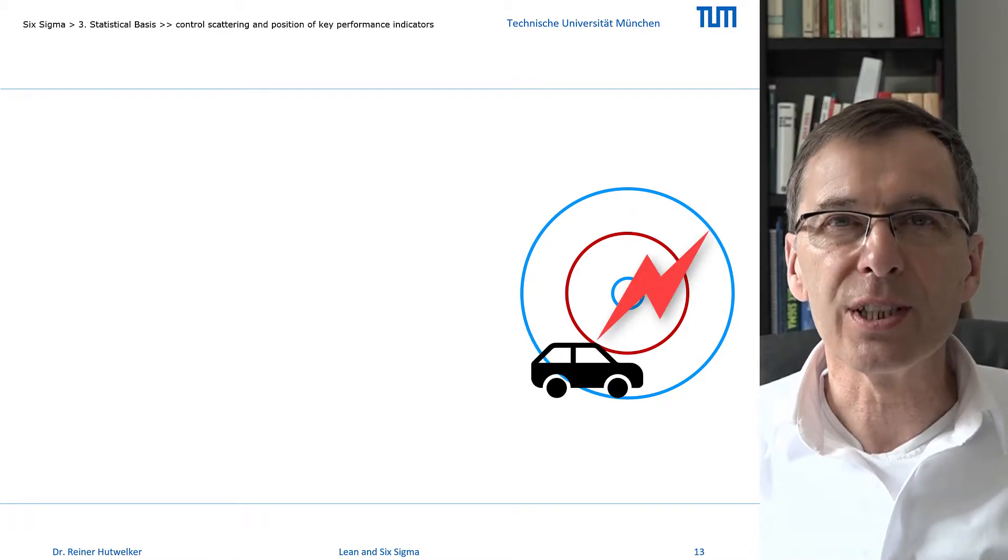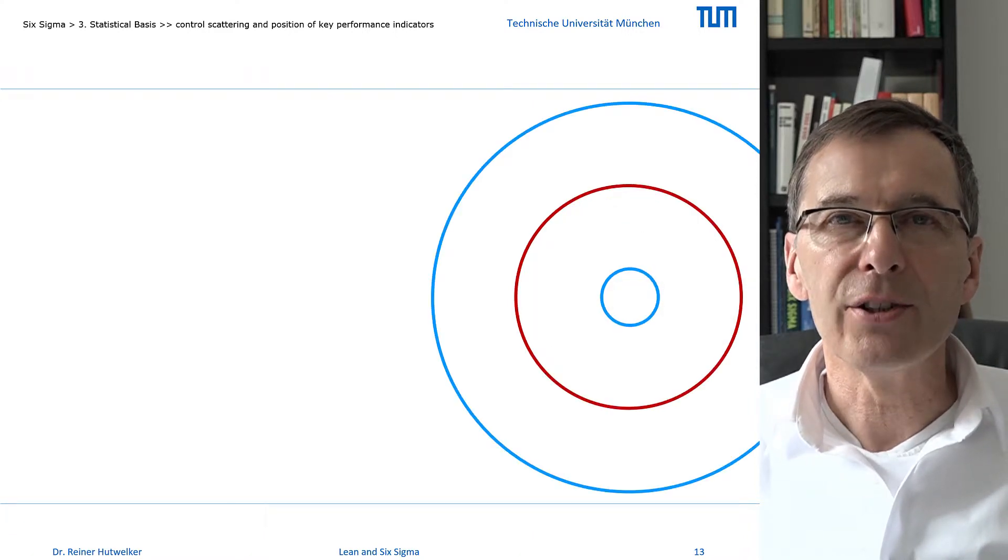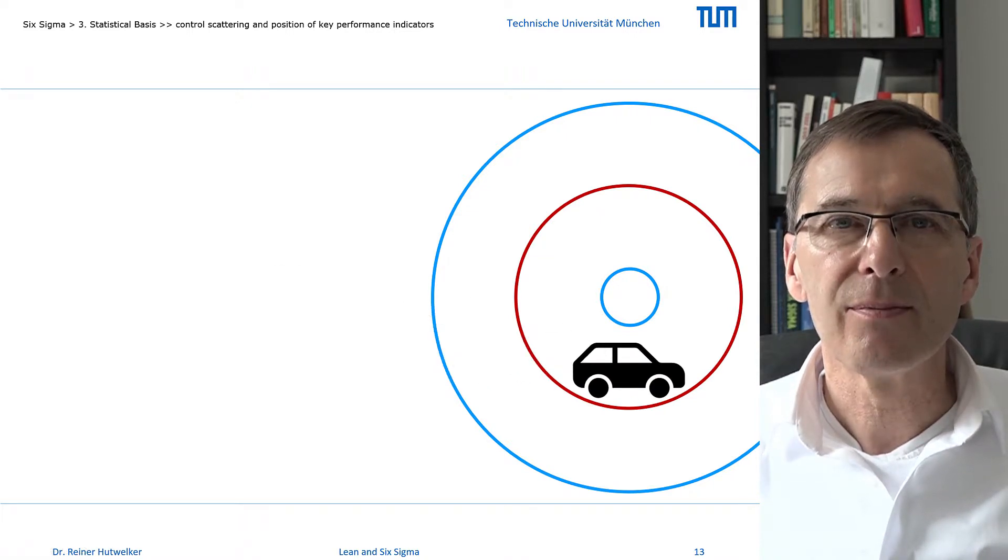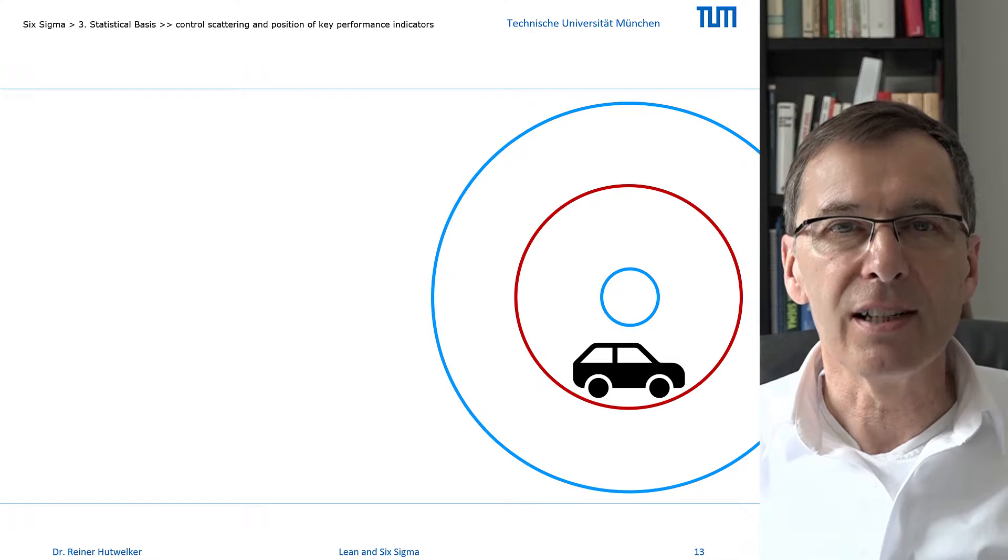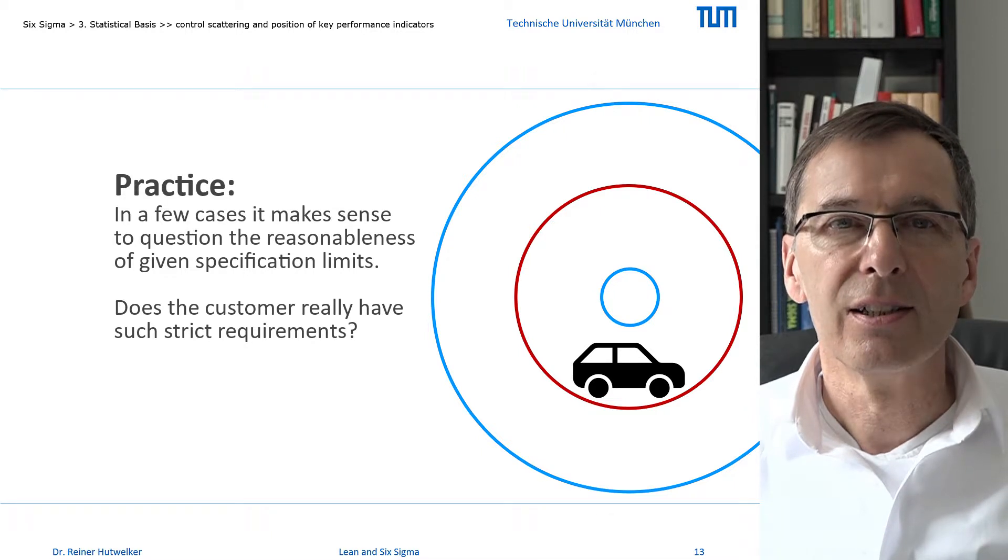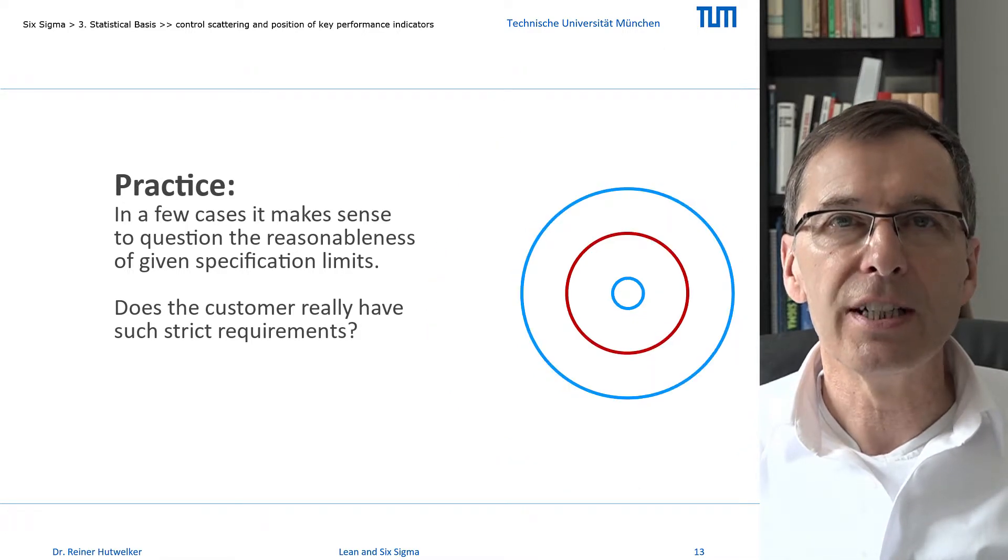There are two ways to increase process capability. If we convince our customer to widen the area of tolerated outputs, i.e. shift the specification limits away from the mean, then the capability of our process rises without changing the process. It's just because we got a broader garage without improving our capability to drive the car. This proposal is not entirely serious, but may be necessary in cases where different departments subtract individual fear buffers from the specification limits originally required by the customer.